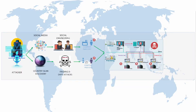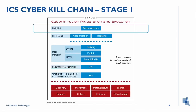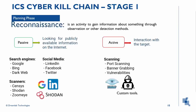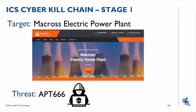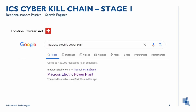In this talk we will try to emulate the most common attack vectors to get access to a remote power plant. For Stage 1, the first step is reconnaissance. Reconnaissance is an activity to obtain information about something through observation and other detection methods. This activity is divided into passive and active reconnaissance, where passive searches for information available in public sources and active interacts directly with the target. Our target is a nuclear power plant called Macros, and the attackers will be a group called APT 666. If we search for this nuclear plant in Google, we have a result showing the plant is located in a specific country.